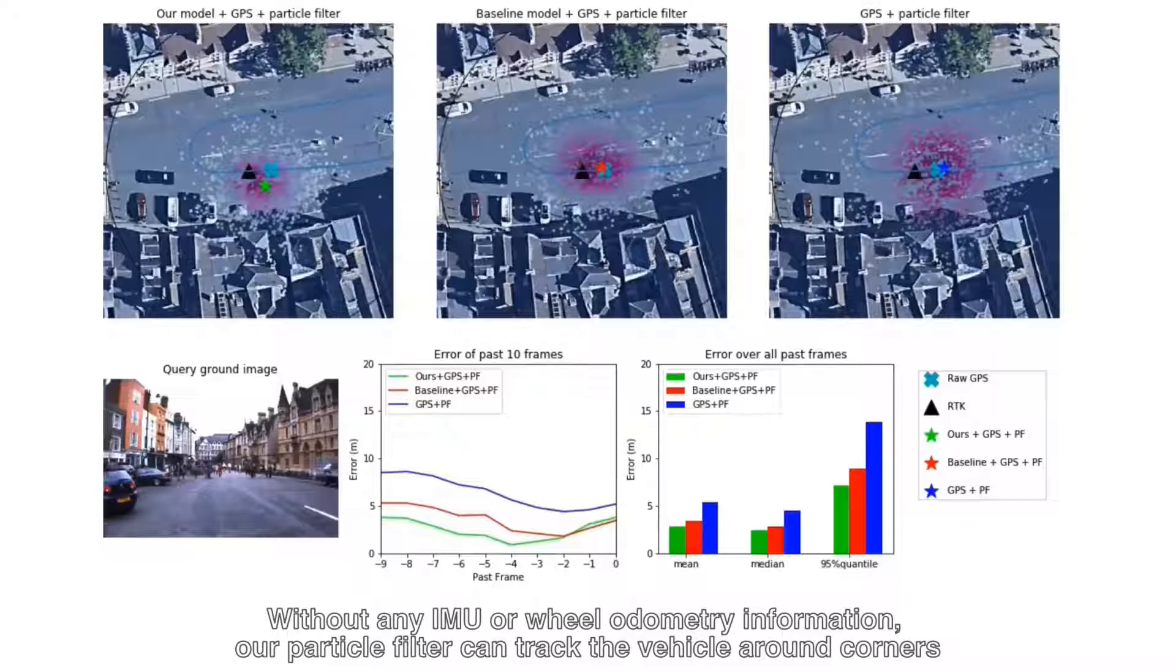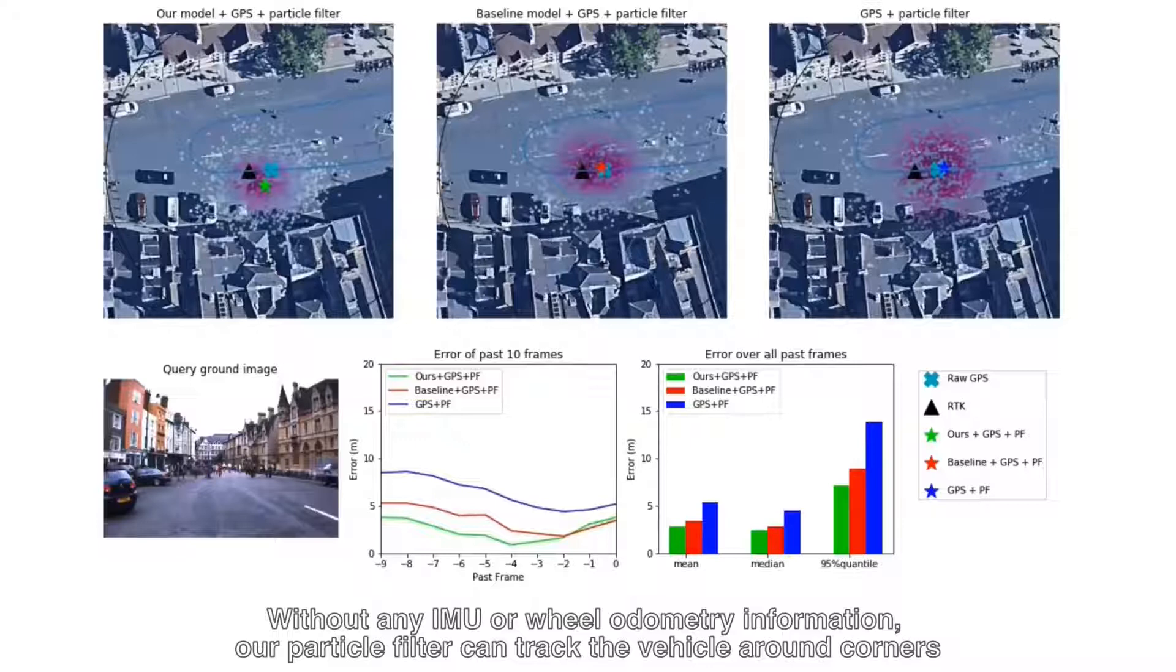Without any IMU or wheel odometry information, our particle filter can track the vehicle around corners.